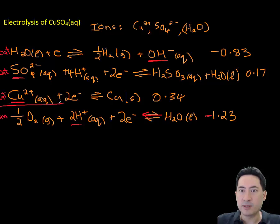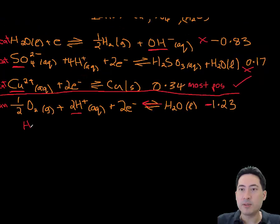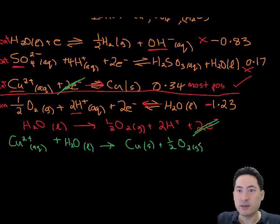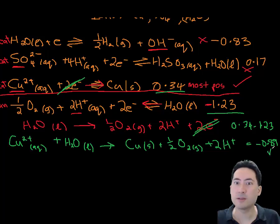You can see the sulfate ion is not very, it's not the most positive. The most positive one there is the copper. So we tick that one. That's the one that we're going to include. We cross out the rest. And we already have the water one that's by itself. Rewrite that one out. Because we had to reverse that. And then we can cancel. Then we can add the reactions together. We can cancel out the two electrons. Rewrite the equation. And of course add those two values together. And so the voltometer should give us a reading of negative 0.89 volts.